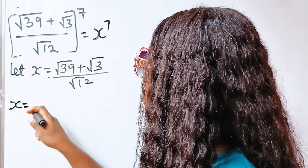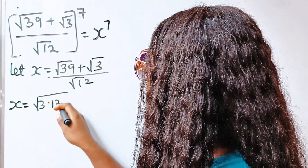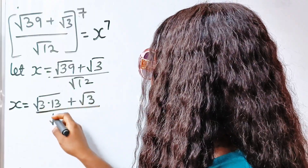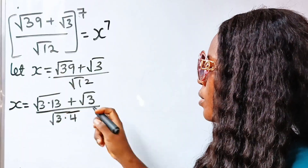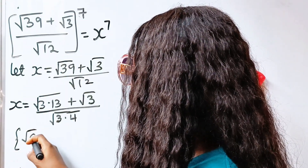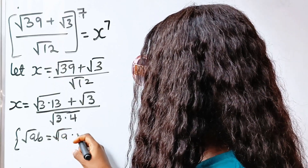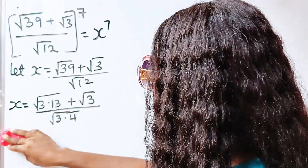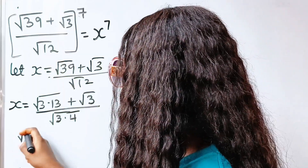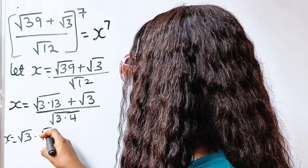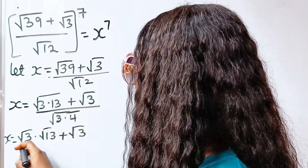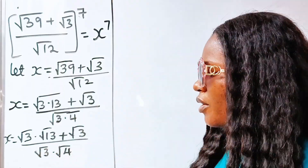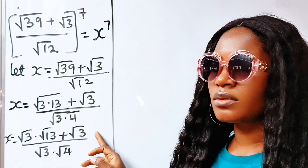So we write x is equal to the square root of 3 times 13 plus square root of 3, divided by the square root of 3 times 3 times 4. Remember that the square root of a times b equals the square root of a multiplied by the square root of b. Applying this, you can see that both the numerator and denominator have square root of 3 in common, so let's factorize that.